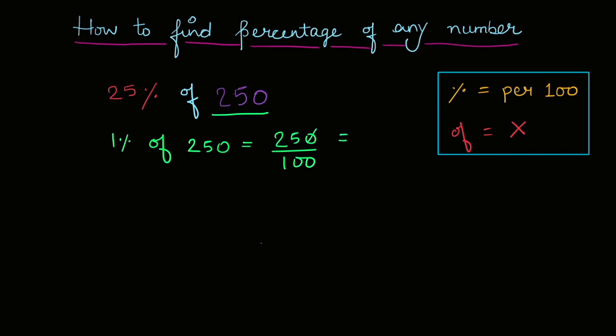Numerator mein zero cancel ho jata hai denominator ke zero se. So we get twenty-five on ten, which is equals to two point five. So now we get one percent of two hundred fifty, right?